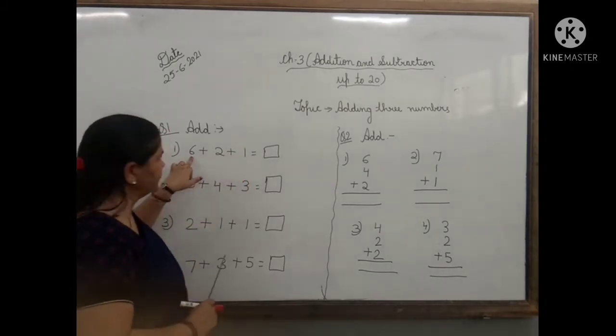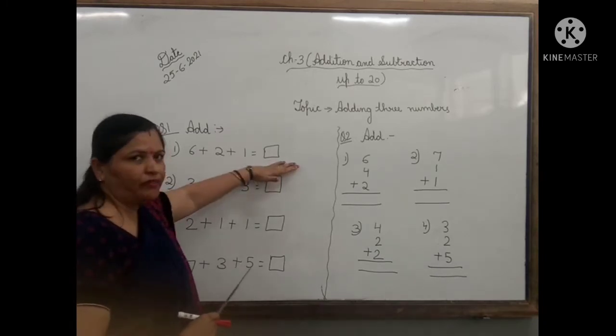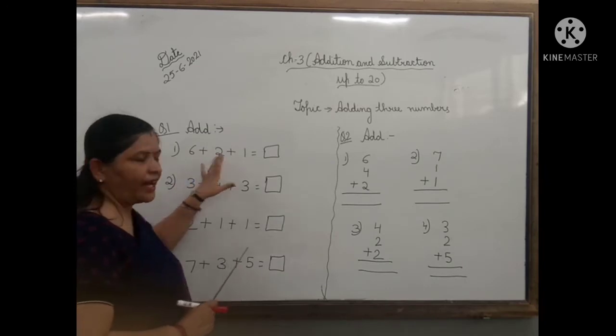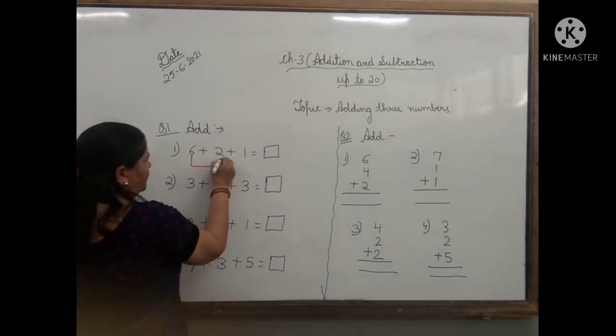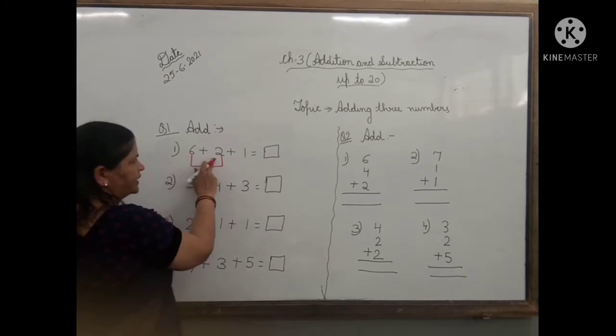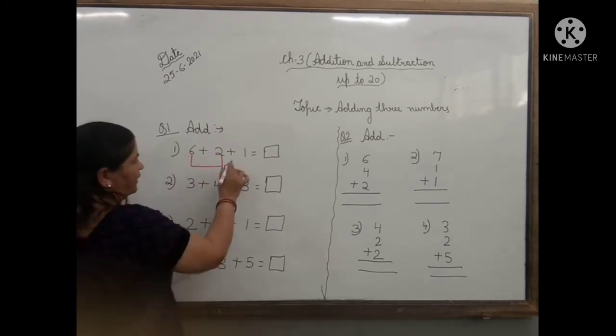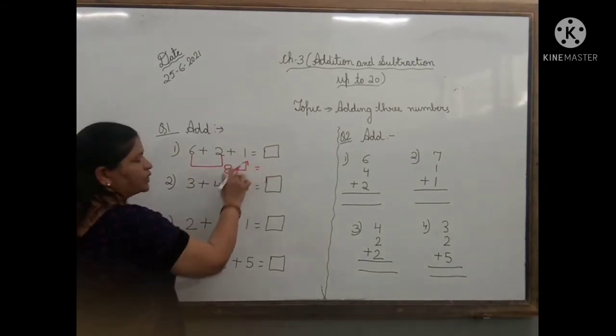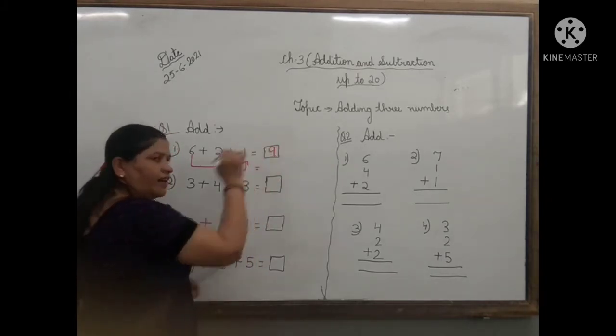The first number is 6 plus 2 plus 1 and then you have to write the answer. For that children, first you have to add the first number that is 6 and 2. If you add 6 and 2, the answer will be 8. And then you have to add the next number plus 1. So 8 plus 1, the answer will be 9.